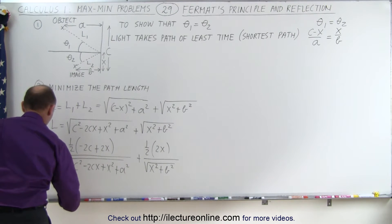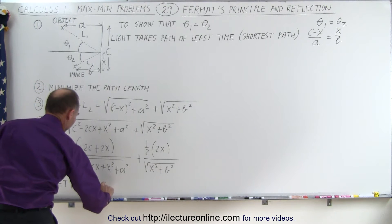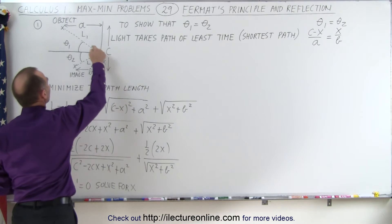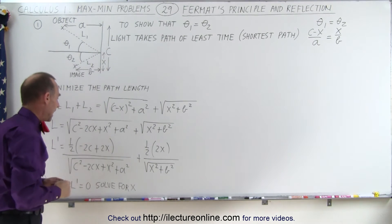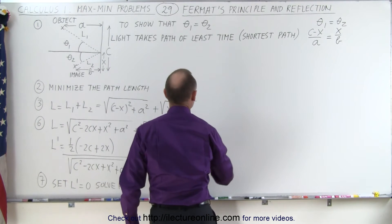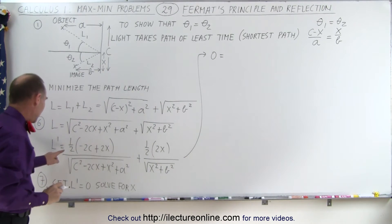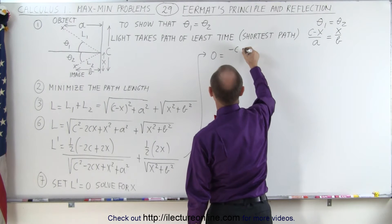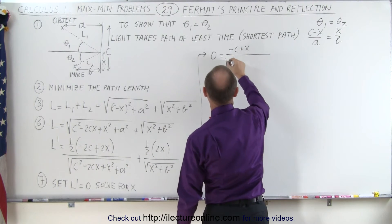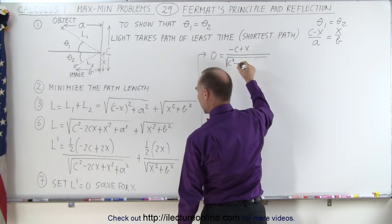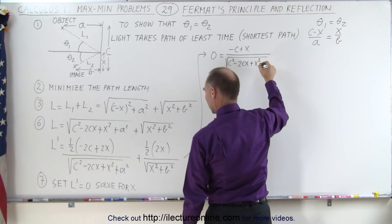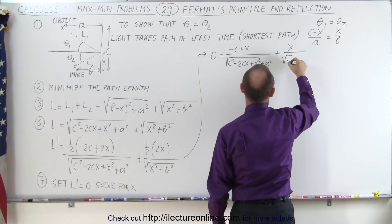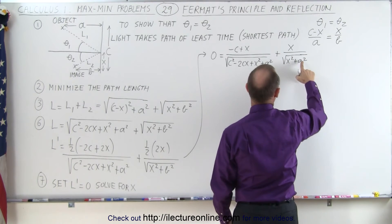Now we're going to set that equal to 0. Step 7: set L prime equal to 0 and solve for x, because x is the only unknown that will determine where the light beam hits the mirror, which will then allow us to determine the angles. The 1 half cancels with the 2's, giving us: minus c plus x divided by the square root of c squared minus 2cx plus x squared plus a squared, plus x divided by the square root of x squared plus b squared equals 0.